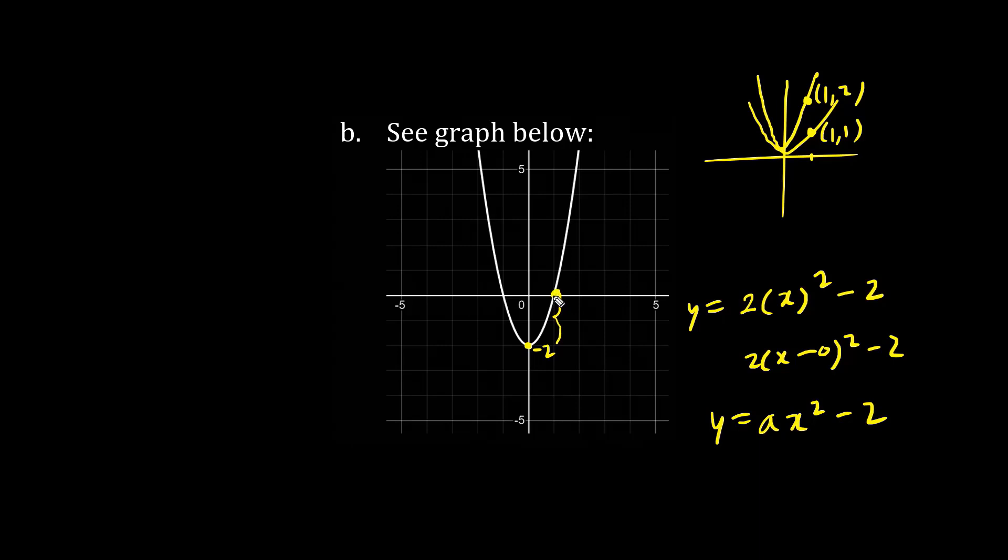We could have substituted some point, such as 1 comma 0 into x and y. The y value is 0, and the x value is 1, so we have 1 squared minus 2. Throwing the 2 over, we have A times 1 squared is just A. So indeed, the A value is 2. So the equation is y equals 2, x squared minus 2.